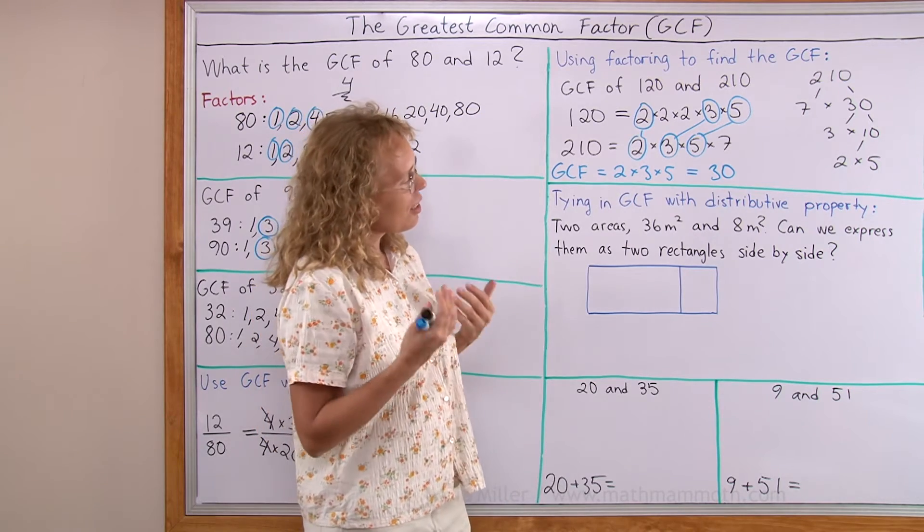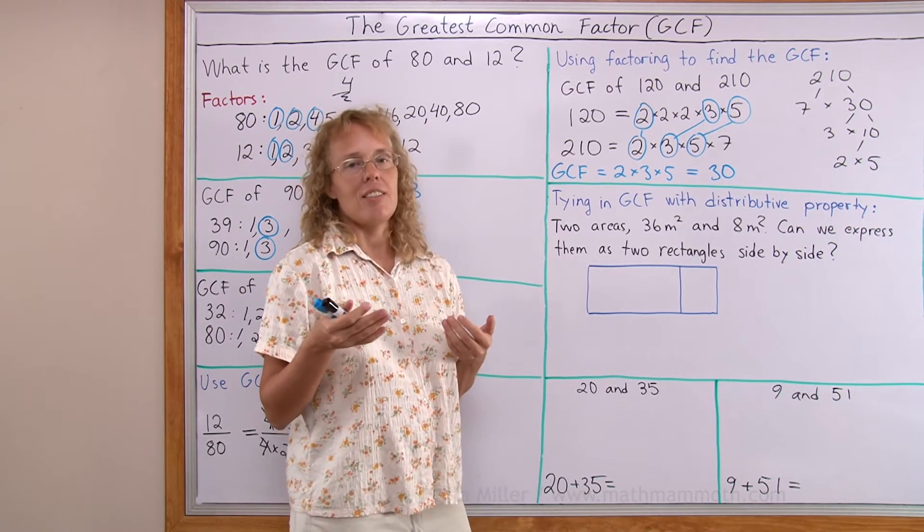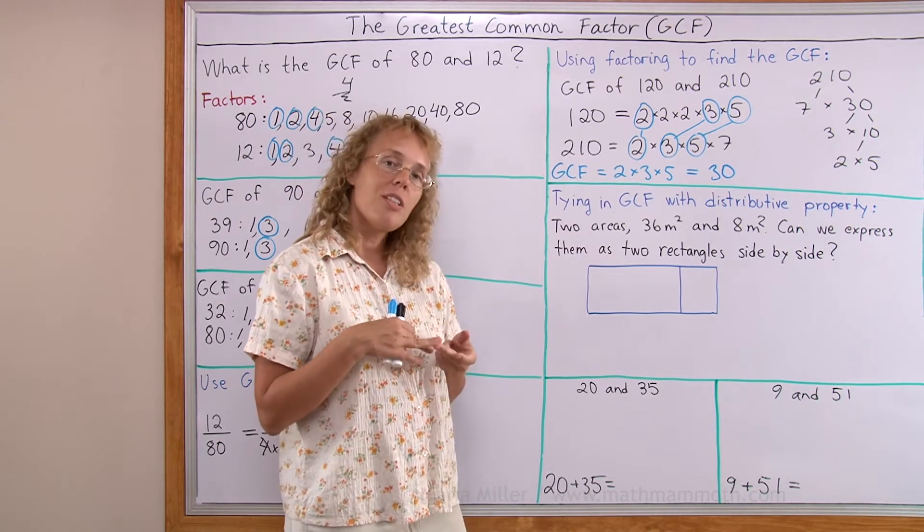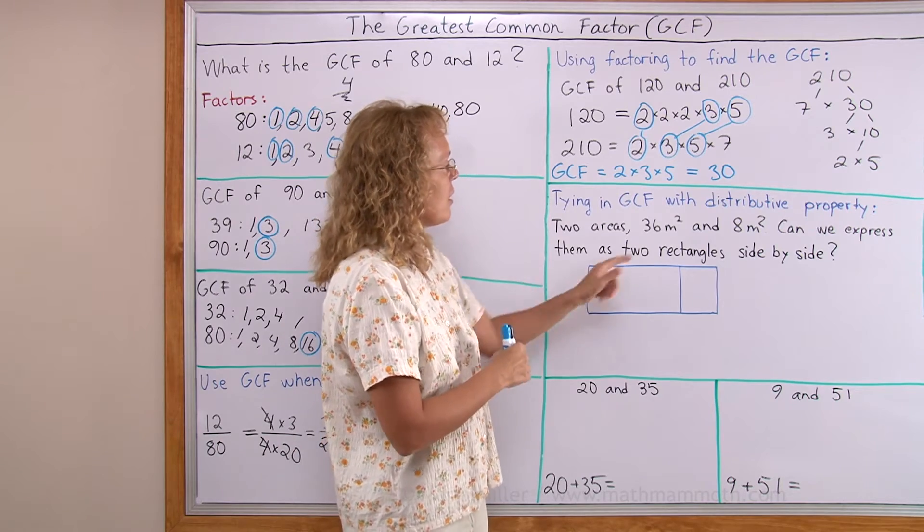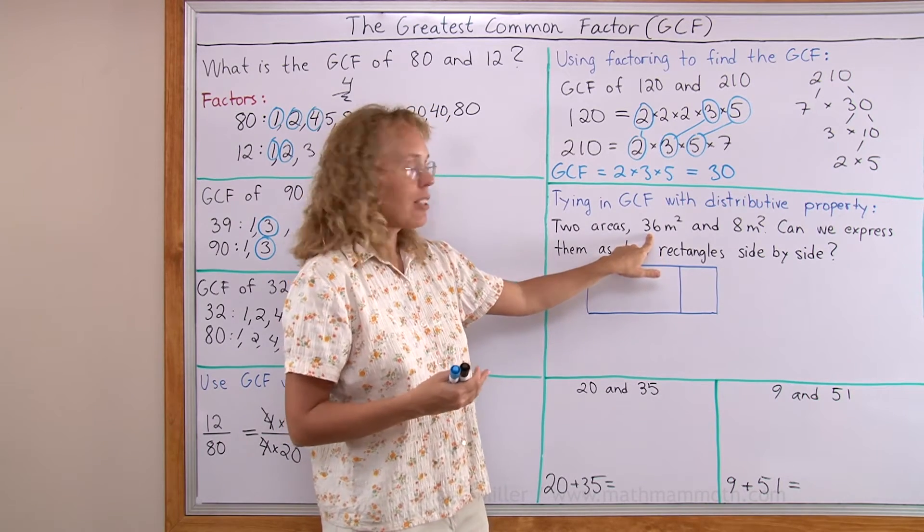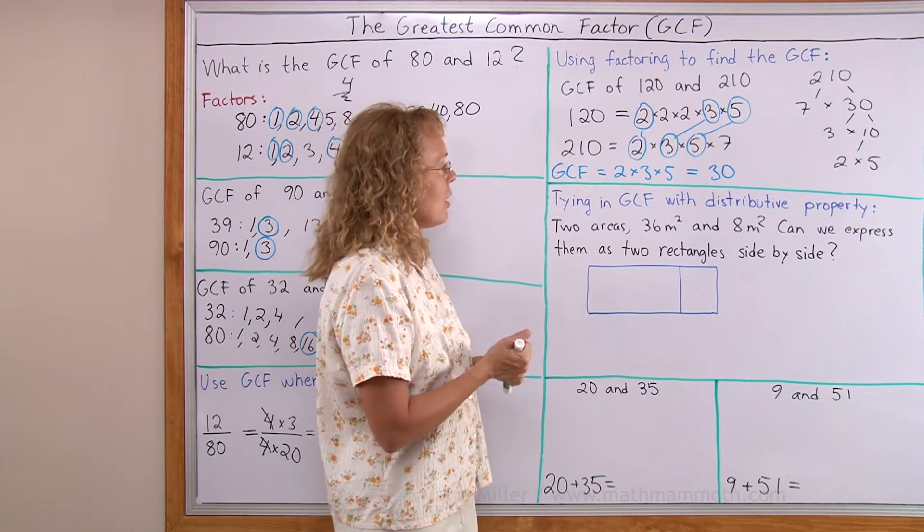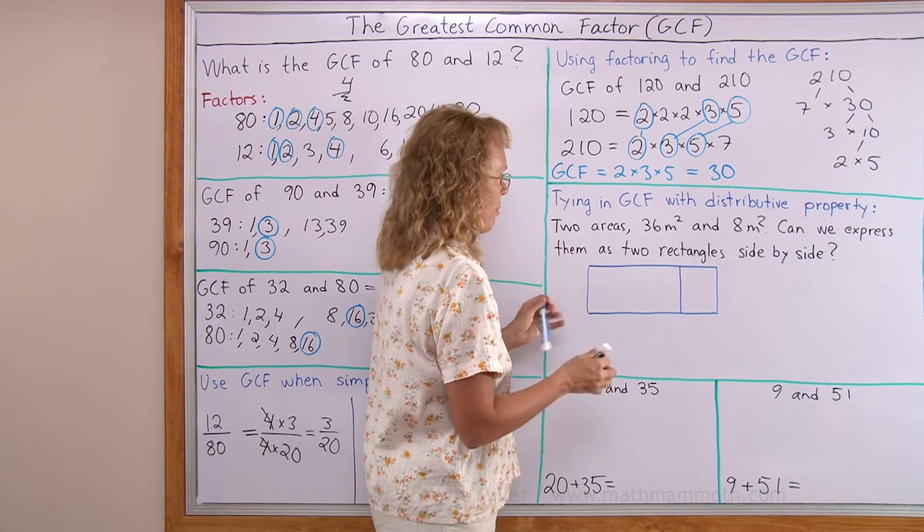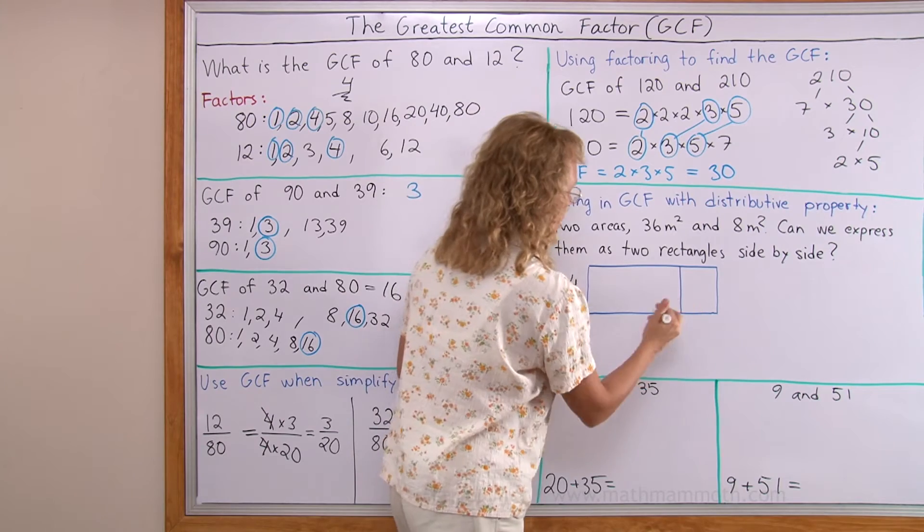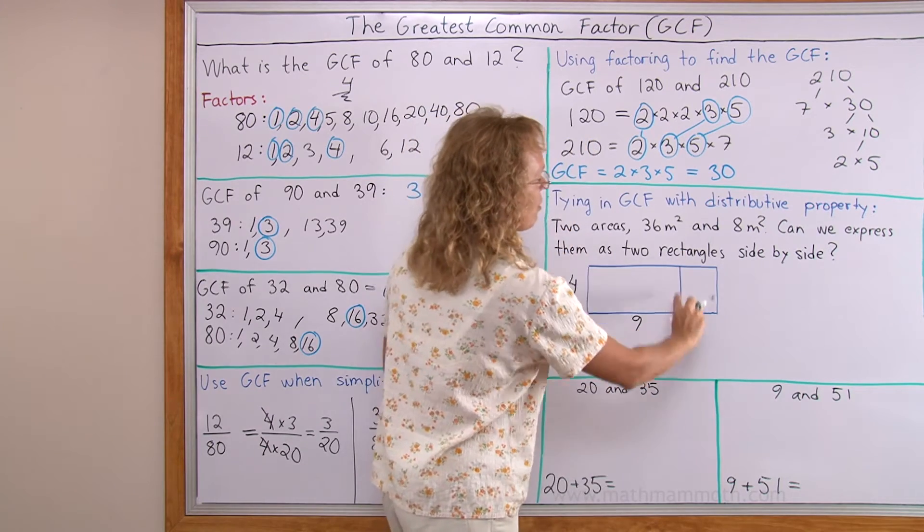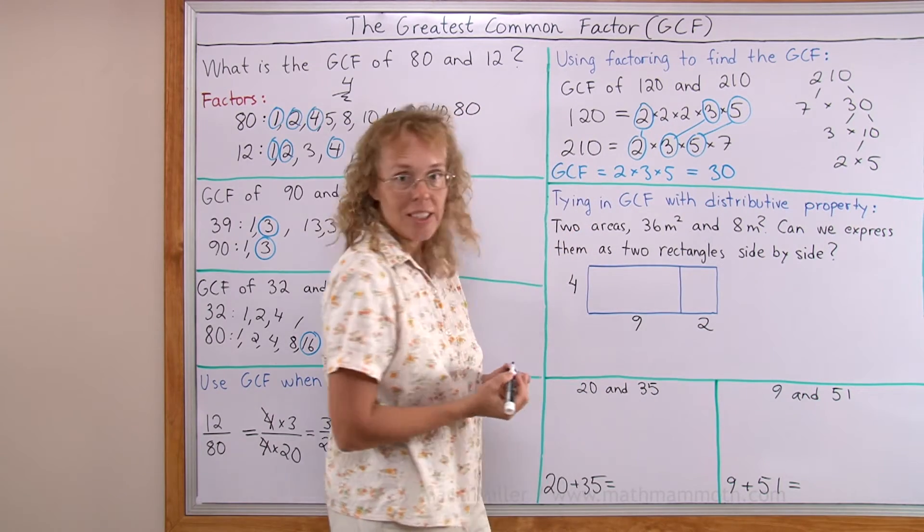And, thinking of 8, 8 has very few factors, it's divisible by 1 and 2 and 4 and 8. And so, of those, 1, 2, 4 and 8, 4 is a factor of 36. So, 4 is a factor of both of them. We'll put 4 here. And then we get 4 times 9 for the first rectangle and 4 times 2 for the second rectangle.